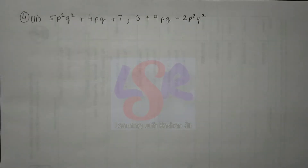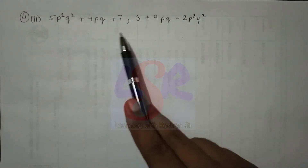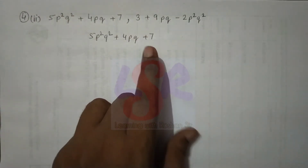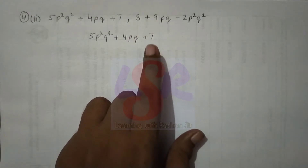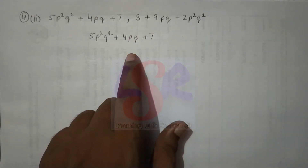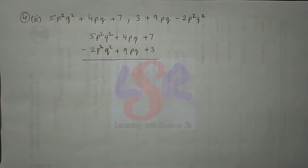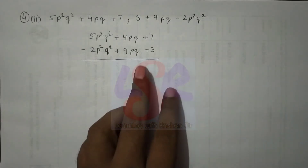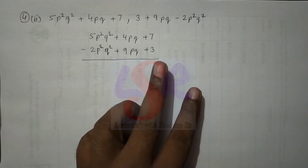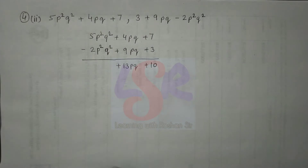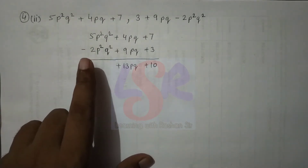In question 4, we have to add the given algebraic expressions. Only like terms can be added. We write the first expression, then write the like terms beneath each one: the constant 3 beneath 7, 9pq beneath 4pq, and minus 2p²q² beneath 5p²q². Adding: 7+3=10, 4+9=13, and 5+(minus 2)=3.